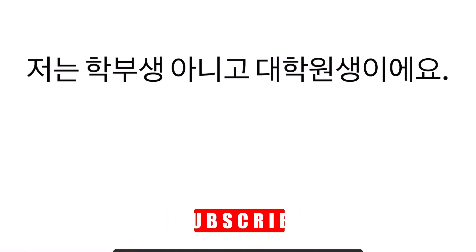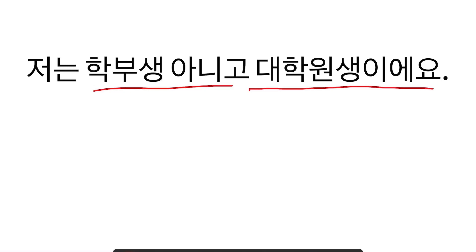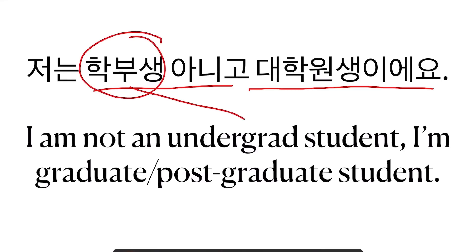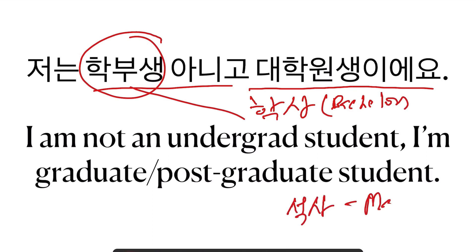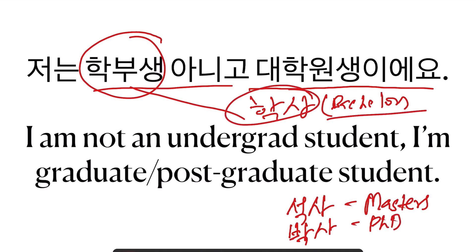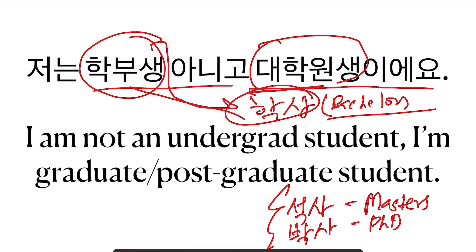이번에는 한국어 문장이에요. 이거 영어로 번역해 보세요. Try to translate it into English: 저는 학부생 아니고 대학원생이에요. 학부생이라고 하면 undergraduate student, 학사 과정 — Bachelors. 그리고 석사가 뭐예요? Masters. 그리고 박사가 뭐예요? PhD. So: 학사 Bachelors는 학부생, 그리고 대학원생은 석사 아니면 박사 — graduate or postgraduate student. I am not an undergraduate student, I am a graduate student — 대학원생이에요.